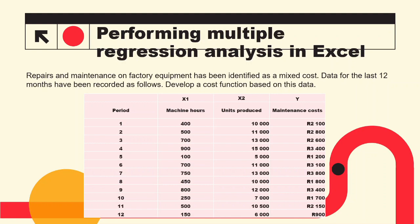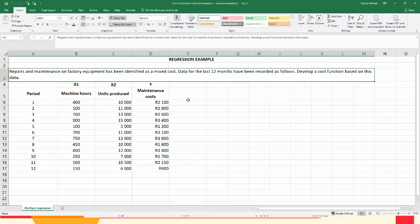Now let us learn how to perform the regression analysis in Excel using an example. Notice in this example that we have one dependent or y variable — our maintenance costs — and we have two independent or x variables: machine hours and units produced. Let us move over to Excel to perform this example. Here we have the example in Excel and let's see how we're going to perform it.